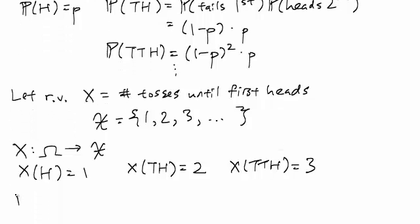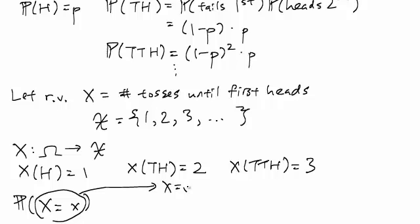So what is the probability that X is equal to some little x? This here is shorthand for saying the set of all omega within the sample space such that X of omega is equal to little x.